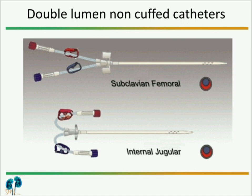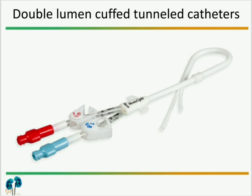This picture shows two types of double lumen non-cuffed catheters: a straight one and a curved one. The straight one can be used for subclavian or femoral catheterization, and the curved one for internal jugular catheterization. The next picture shows a double lumen cuffed tunneled catheter, which has a curved diagram, is tunneled through the skin, and is considered a permanent catheter.